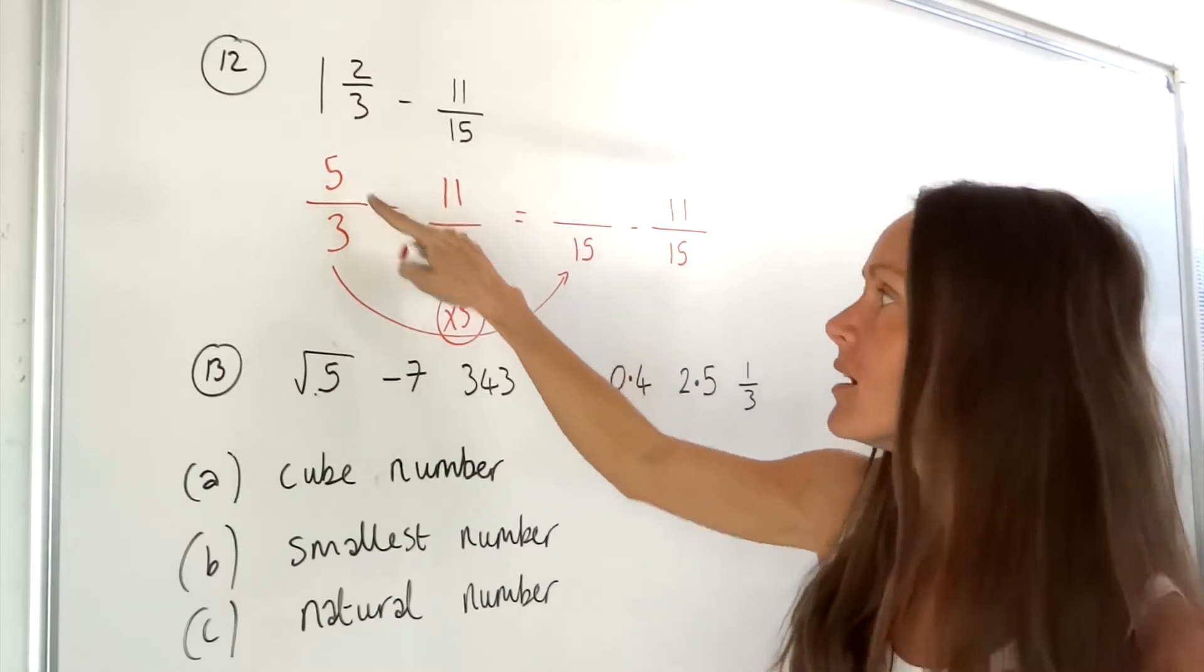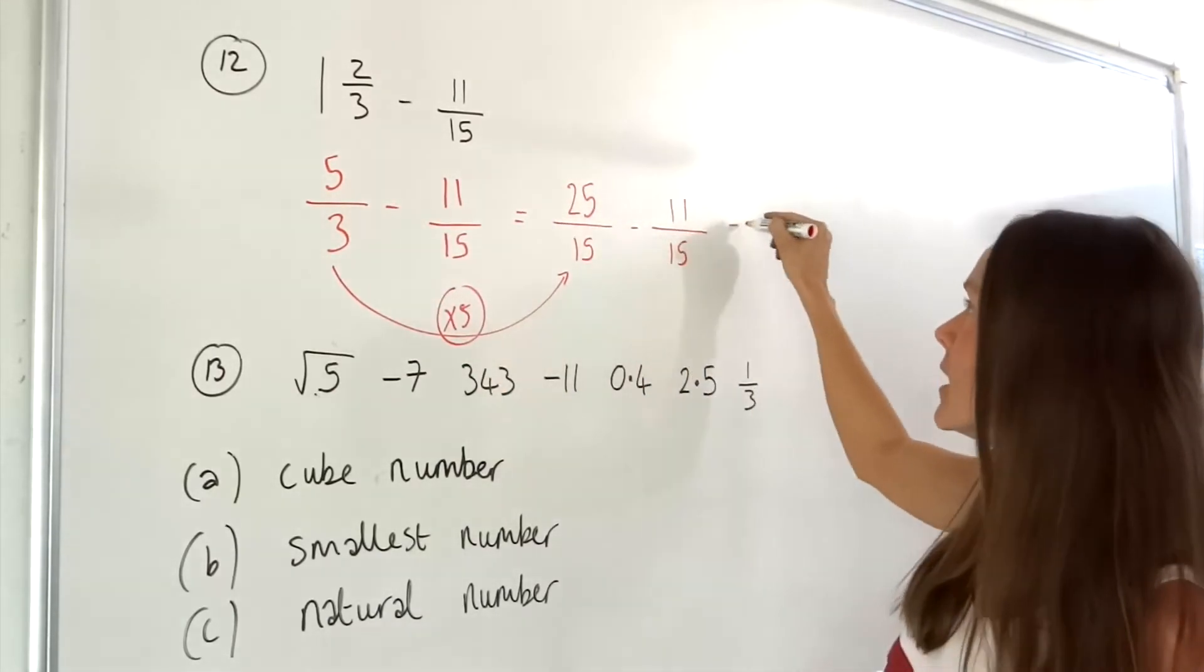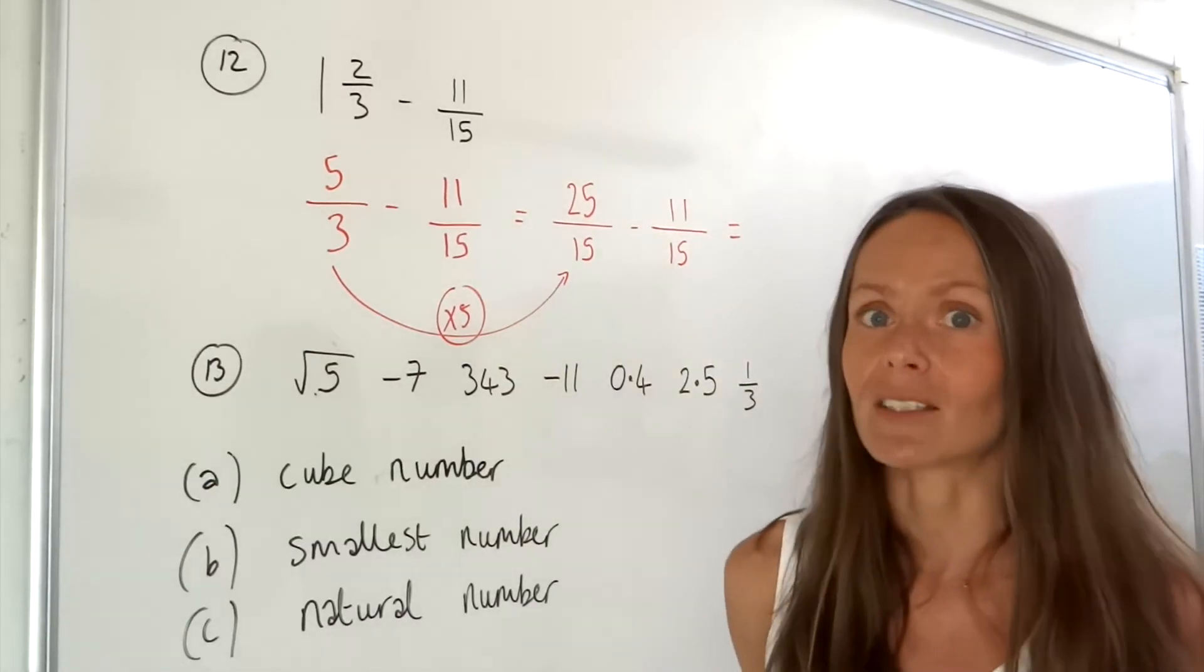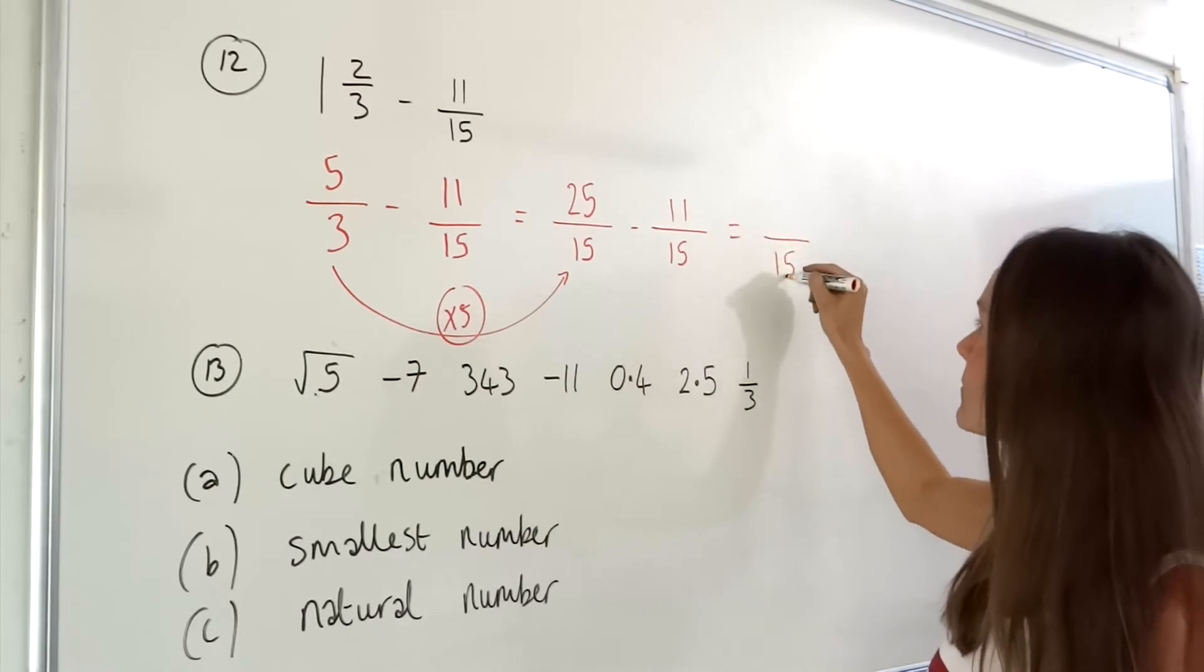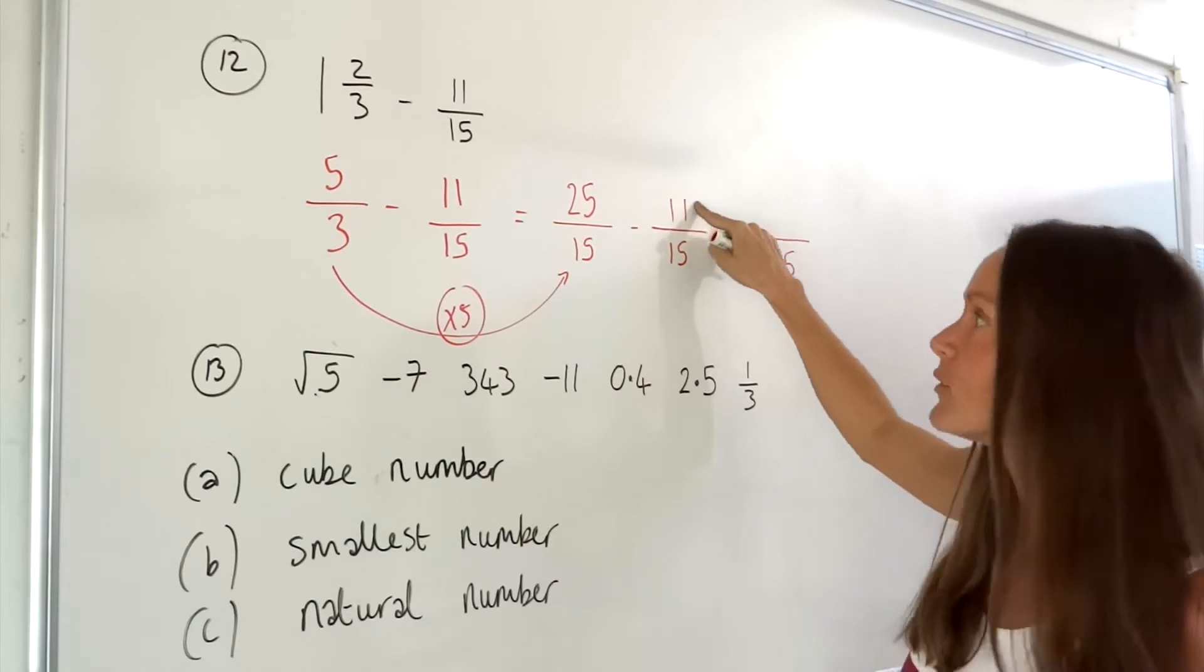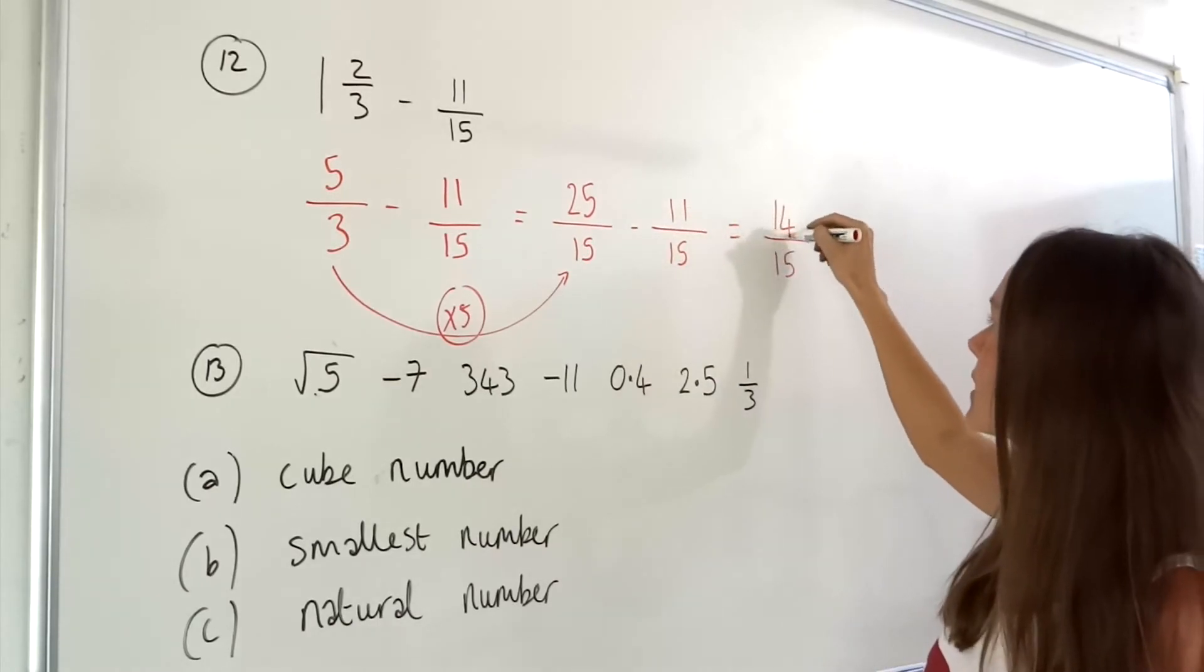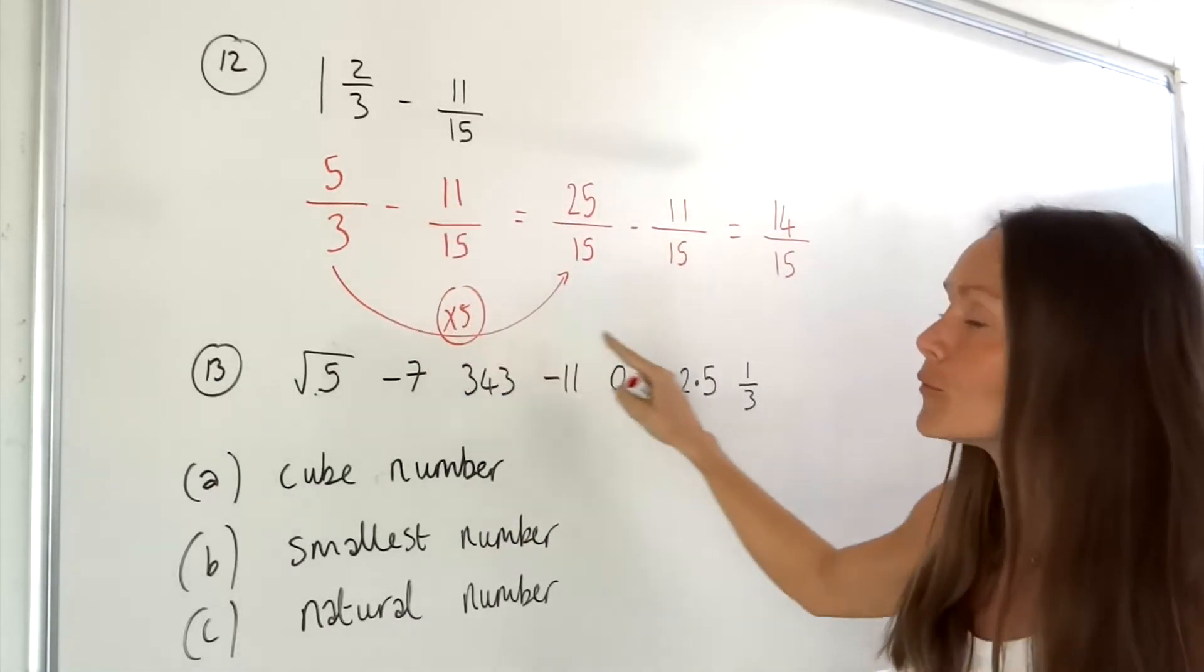We have to multiply this number by 5 as well giving us 25. Now that we've got the common denominators we're allowed to subtract these two fractions. The denominator stays the same and on the top we have to do 25 minus 11 which is 14. We can't simplify that fraction any further, so that will give you full marks in the exam.